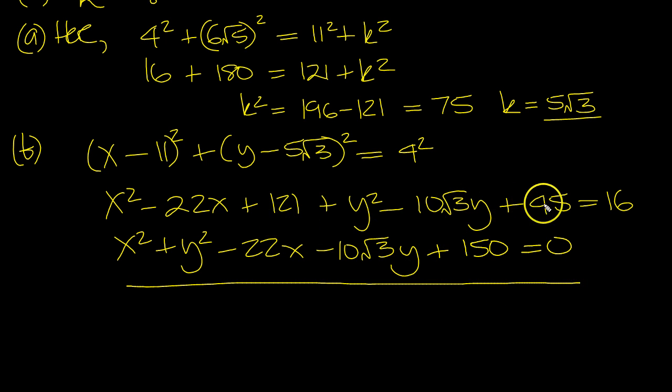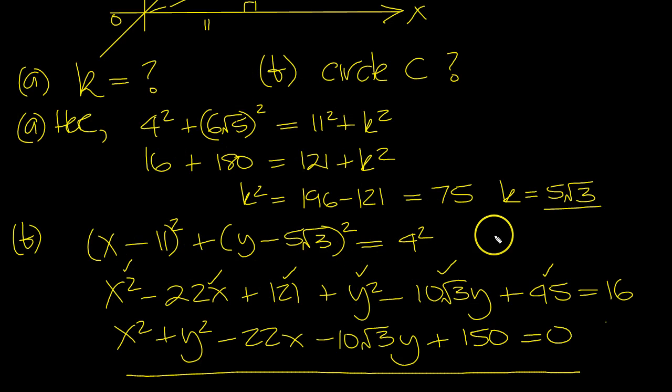121, 166. Take the 16. So there's the x squared. There's the y squared. There's the 22x. There's the 10 root 3. And the 121, 166, take 16, is 150. Just a silly error here. I just looked at the solution, so I need to make a correction.